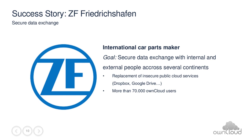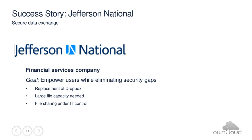One last example: Jefferson National, a company from the financial services world. They also had an issue with public cloud services. They wanted to empower their users while making sure that IT is still in control of the data and the sharing of data. They also had a demand for sharing large files with internal and external parties.